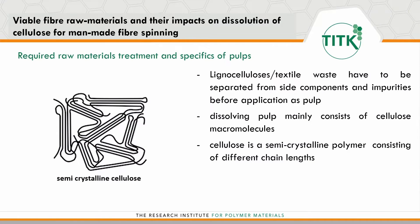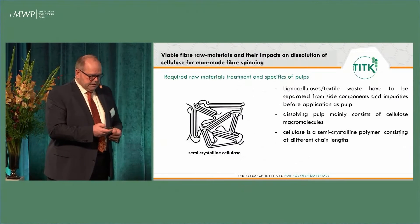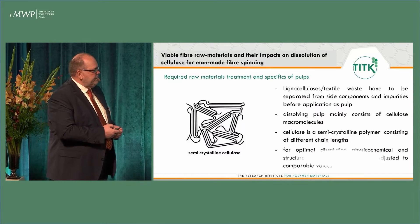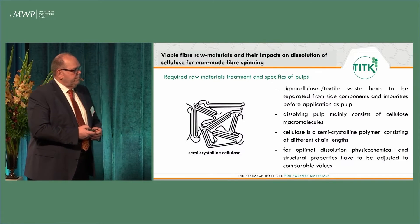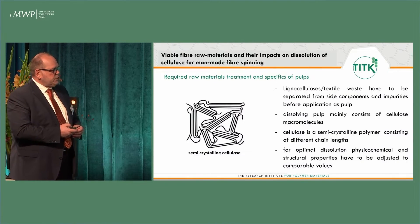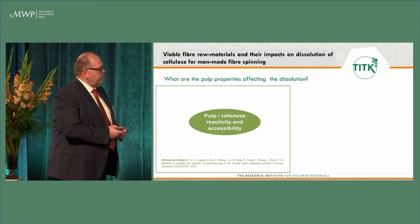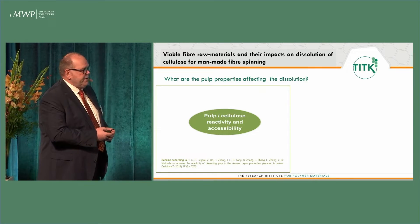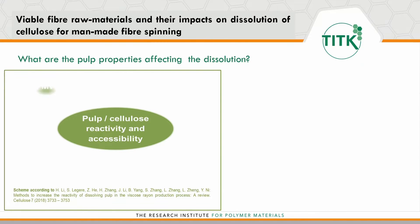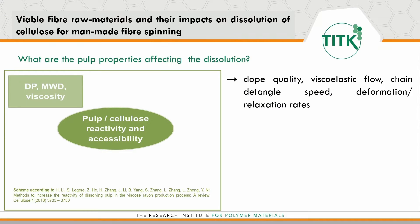Cellulose itself is a semi-crystalline polymer consisting of chains of different chain lengths. For optimal dissolution, physicochemical and structural properties have to be adjusted to comparable values. The pulp properties affecting the dissolution include, on one hand, molecular properties like degree of polymerization, molecular weight distribution, or even the properties of the dopes made from this pulp.